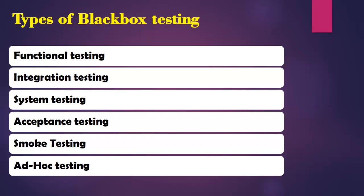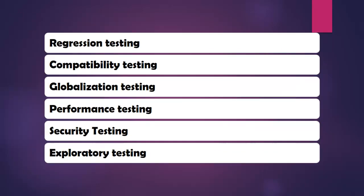Now let's see the types of black box testing. There are many types: functional testing, integration testing, system testing, acceptance testing, smoke testing, sanity testing, regression testing, compatibility testing, globalization testing, performance testing, security testing, and exploratory testing. We will see all these types of testing in detail in upcoming videos.